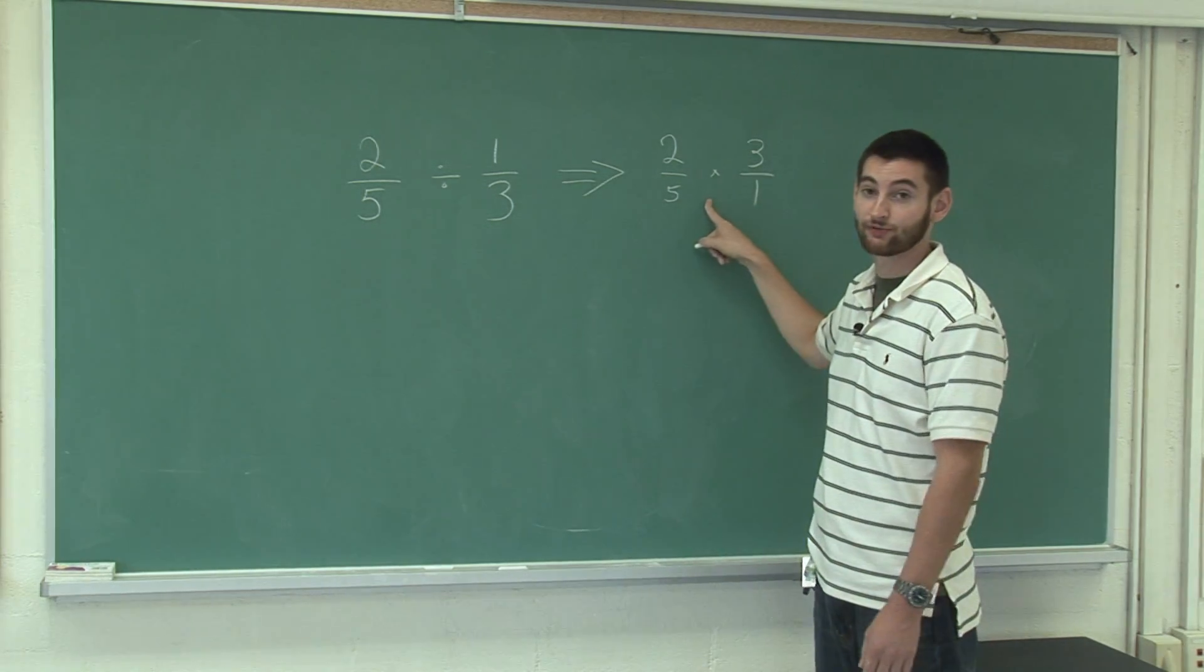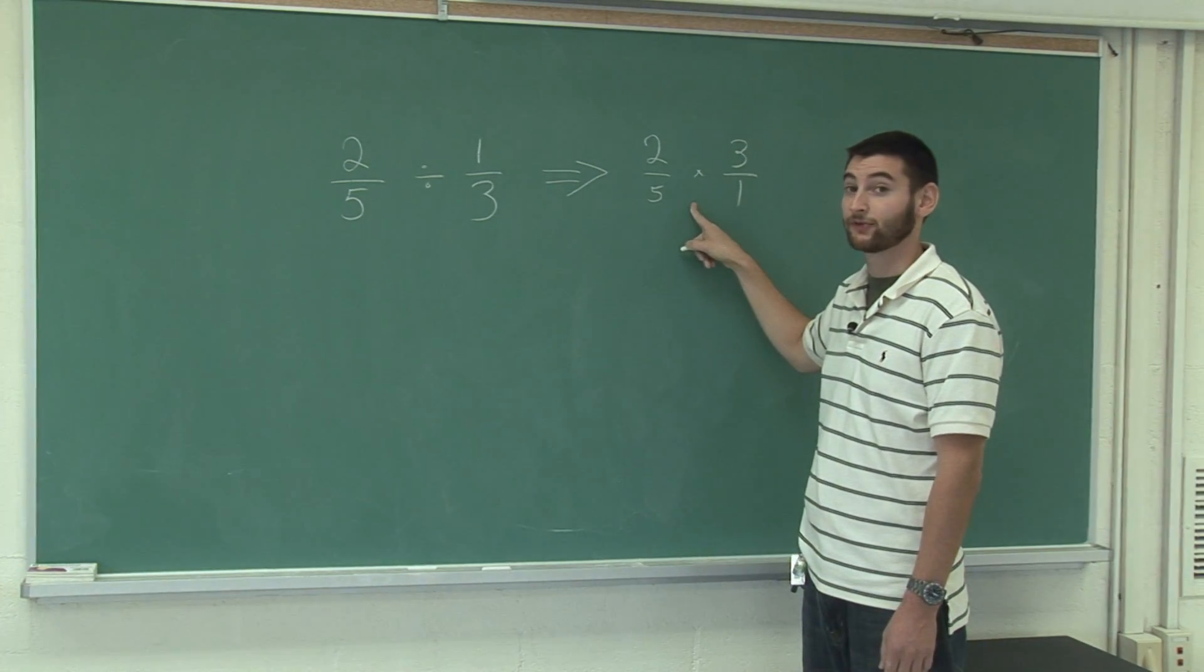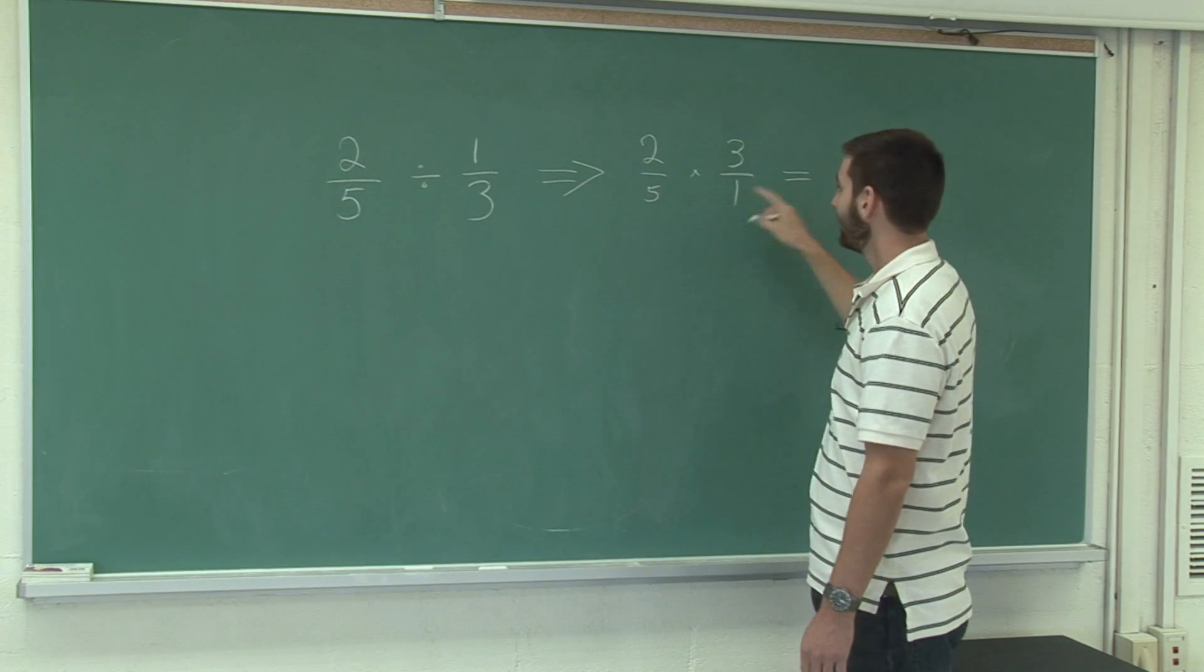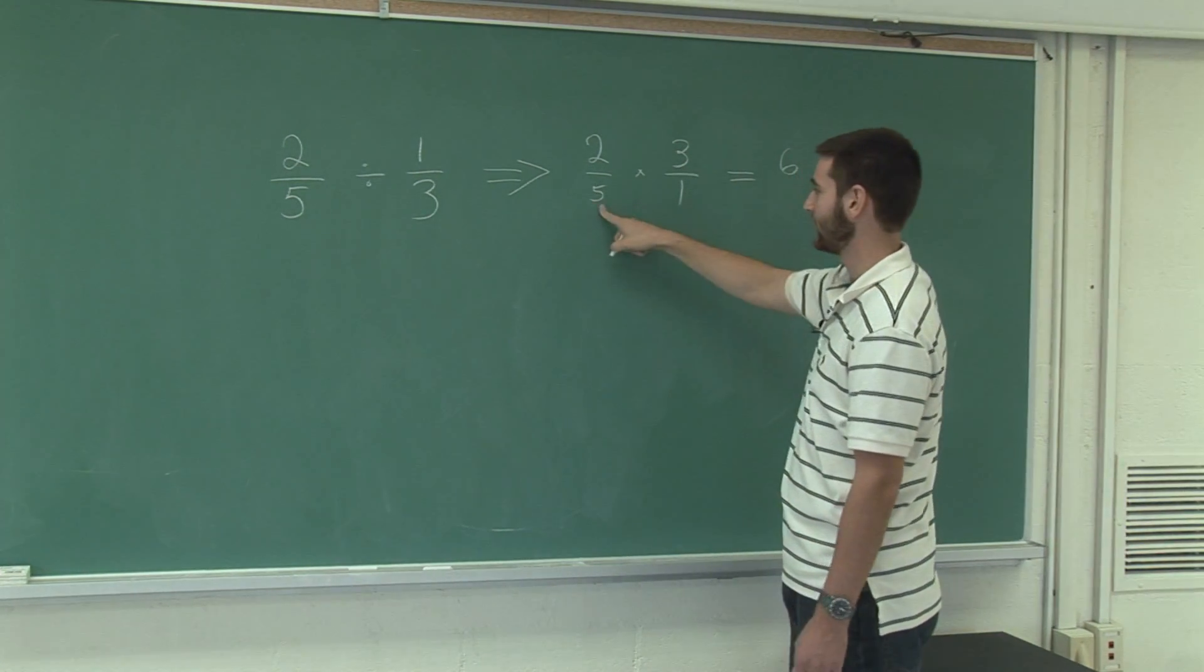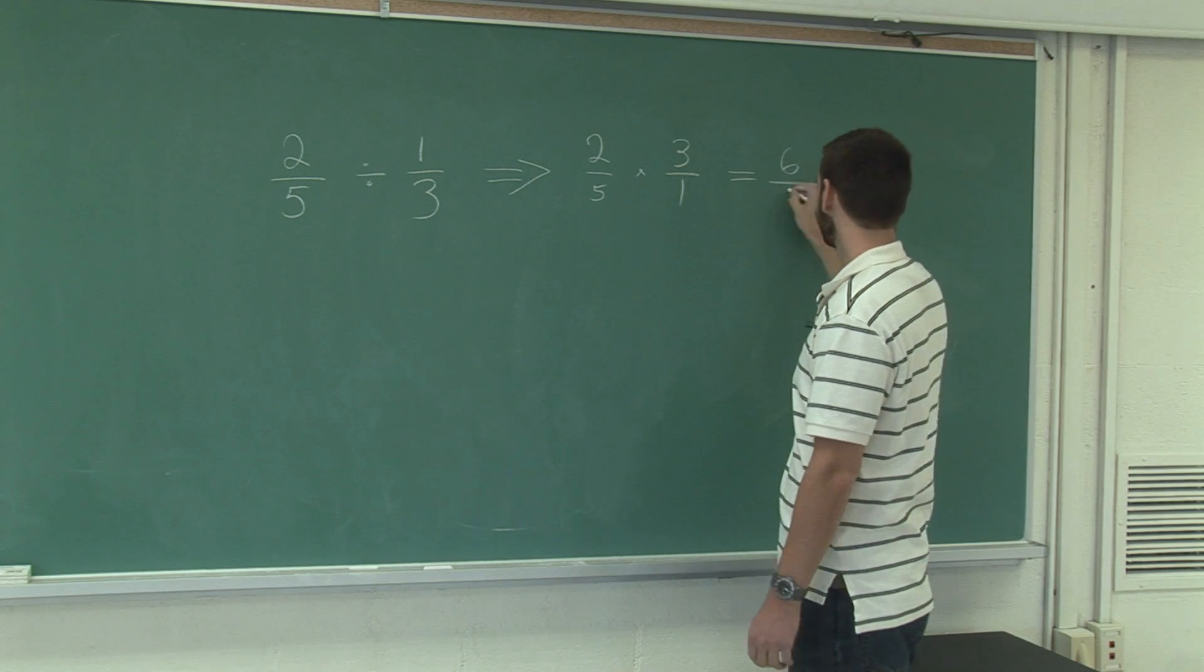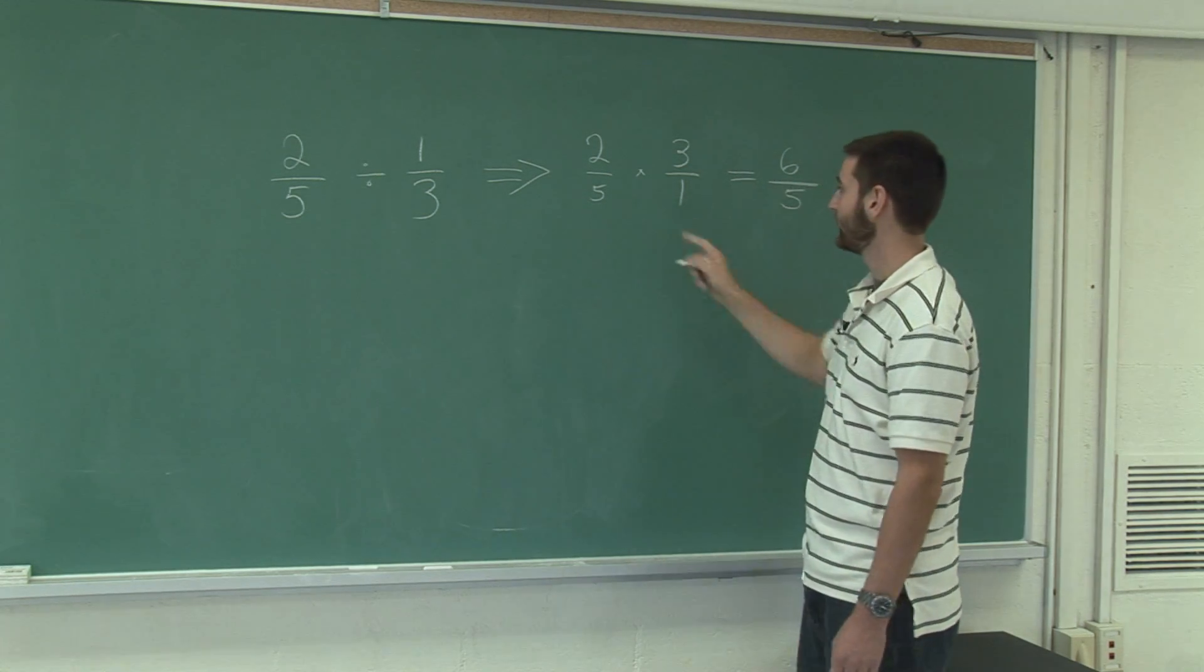Now the problem is transformed to an easy fraction multiplication problem. You just take the two numerators, multiply them together, and the denominators and multiply them together. That's how you divide fractions.